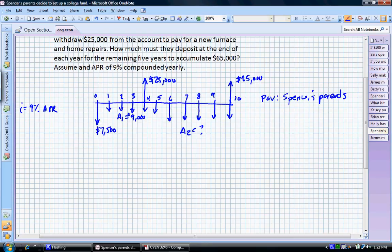Finally, we need to account for this A2, the investments that occur from year six through year 10 that we don't know that we're solving for. So the way I'm going to set this problem up is $65,000 is what we need in the future. We're going to convert all of these investments and withdrawals into future value.